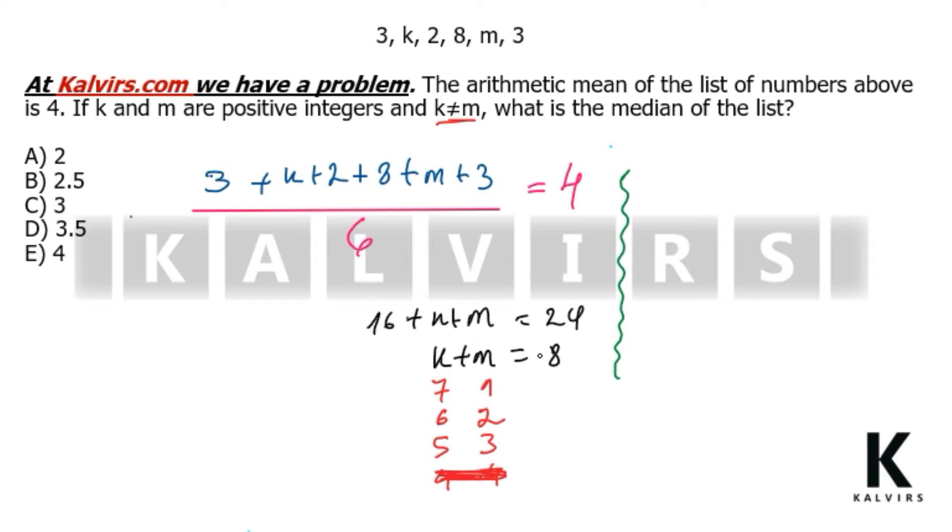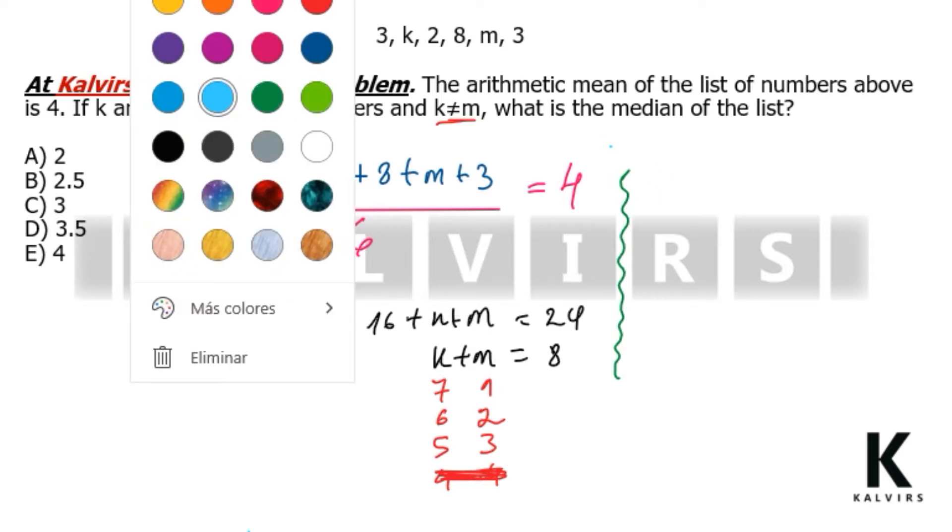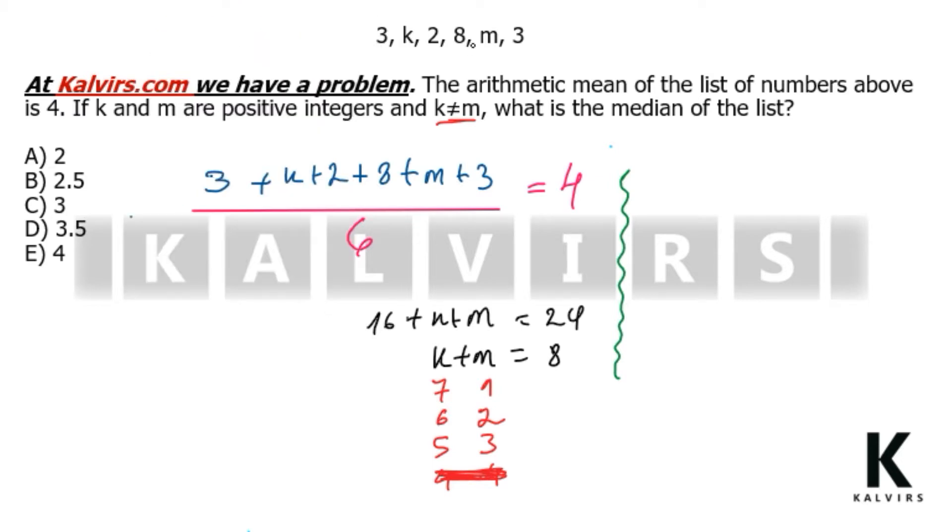Well, in order to have the median, we put in order the list above. And this is 2, 3, 3, and 8. And we can put the letters at the end.